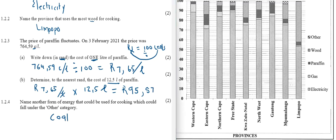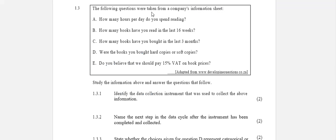For question 1.3, we're told that the following questions were taken from the company's information sheet. There are five questions that they issued in order to collect information. Question 1.3.1: Identify the data collection instrument that was used to collect the above information. As you can see, the person was given questions, so that instrument would be a questionnaire, a list of questions. A survey could also be used to collect information, or an interview could also be used.